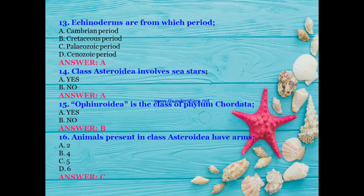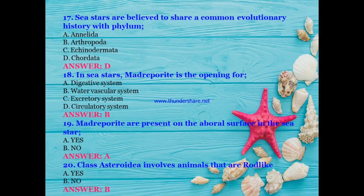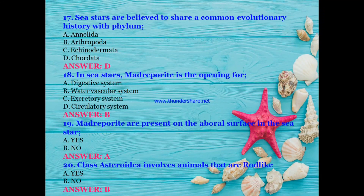Sea stars are believed to share a common evolutionary history with which phylum — Annelida, Arthropoda, Echinodermata, or Chordata? The answer is D — Chordata. In sea stars, madriporite is the opening for which system — digestive, water vascular, excretory, or circulatory? The answer is B — water vascular system.